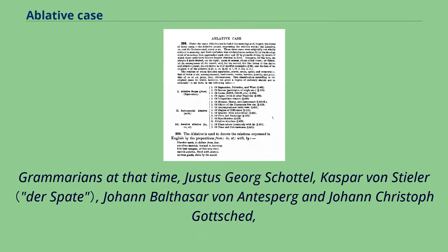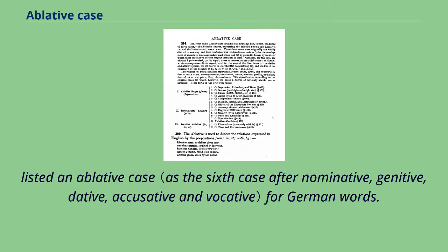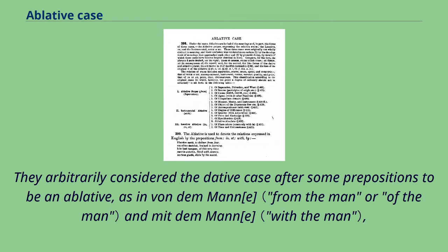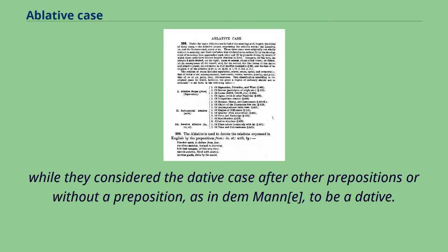Grammarians at that time — Justus Georg Schottel, Kaspar von Stieler, Johann Balthasar von Antesperg, and Johann Christoph Gottsched — listed an ablative case for German words. They arbitrarily considered the dative case after some prepositions to be an ablative, as in von dem Mann and mit dem Mann, while they considered the dative case after other prepositions or without a preposition, as in dem Mann, to be a dative.